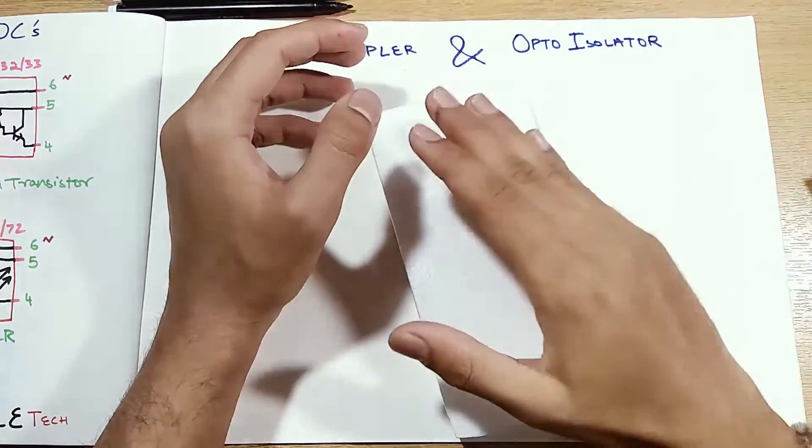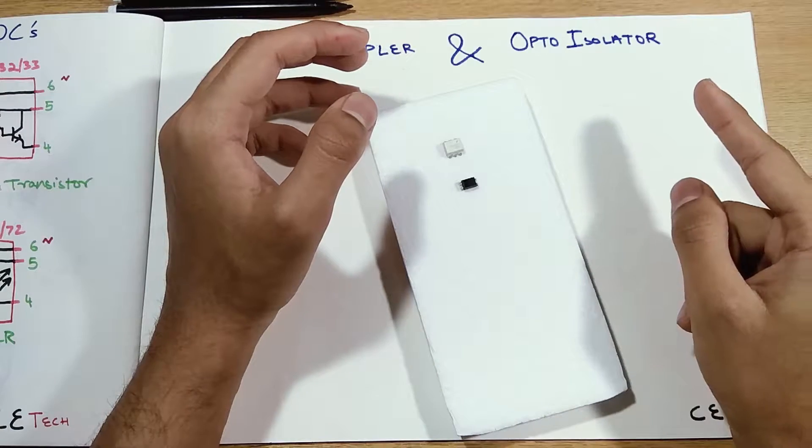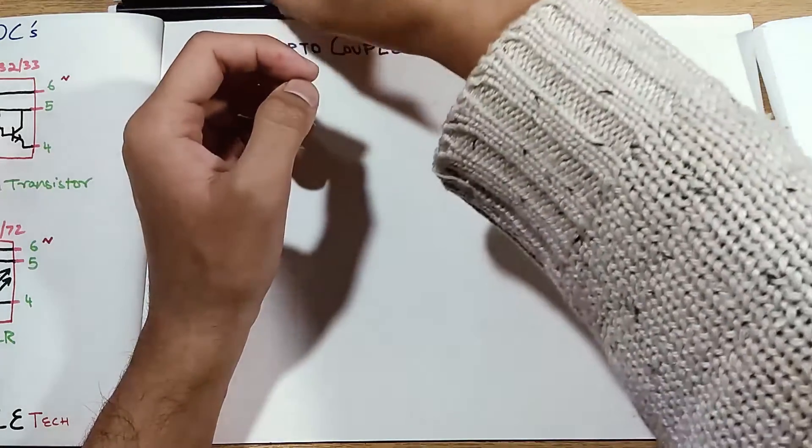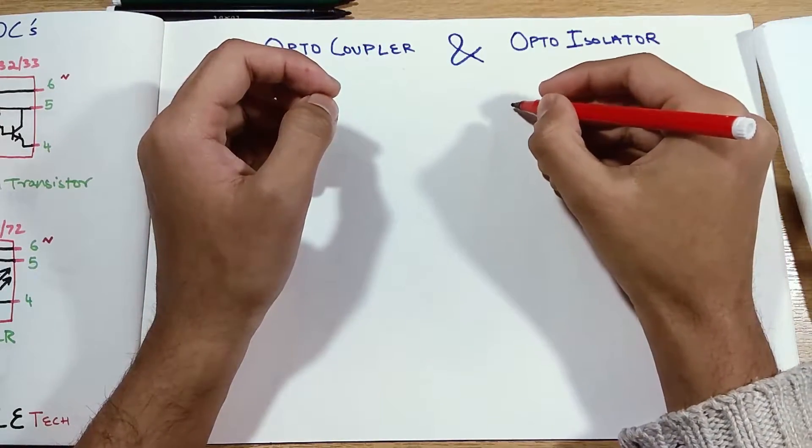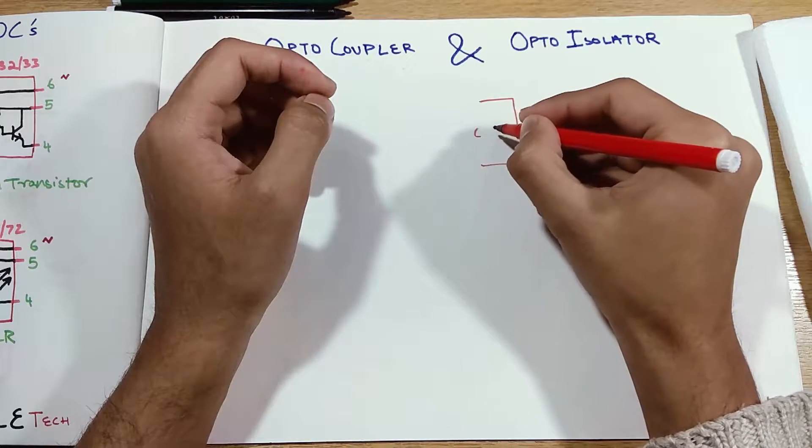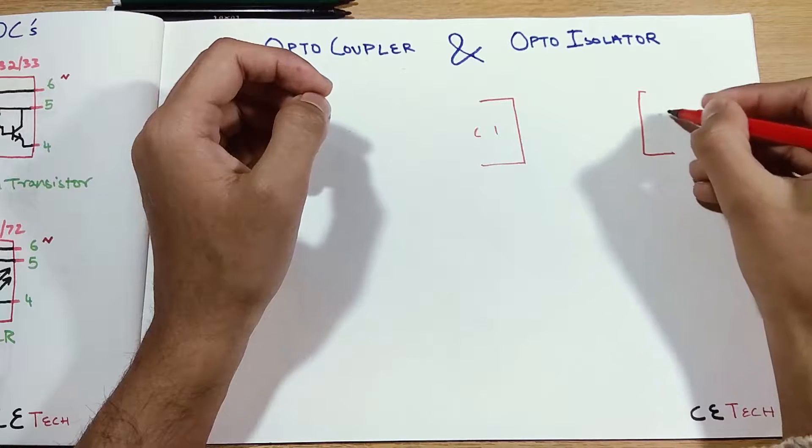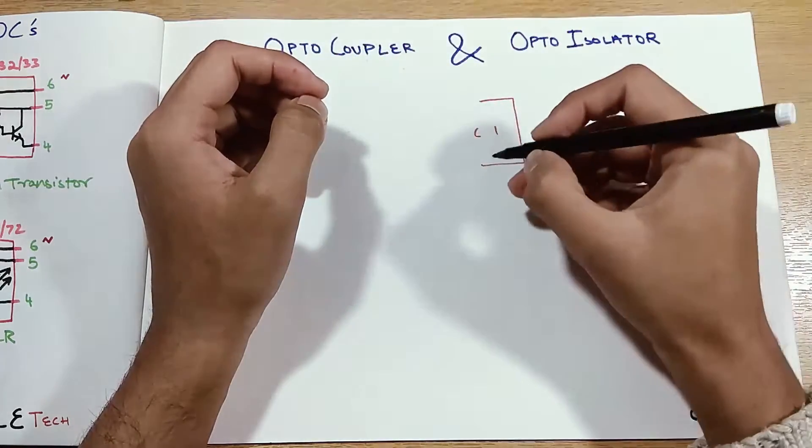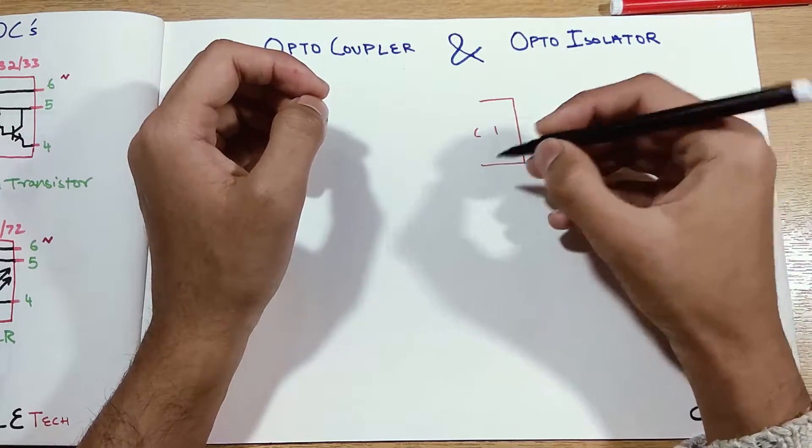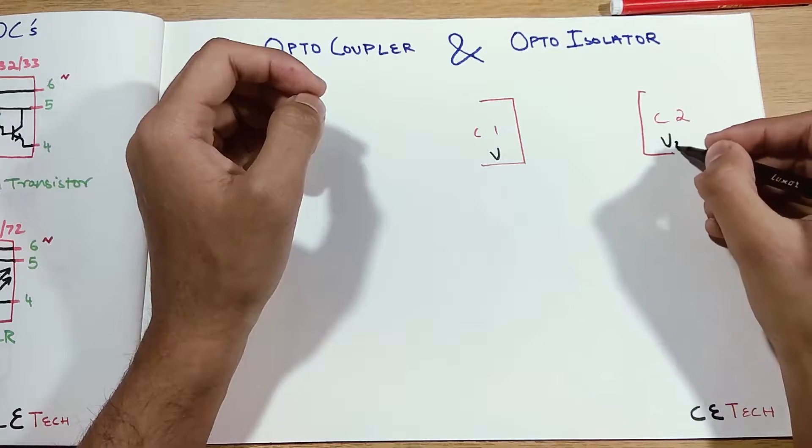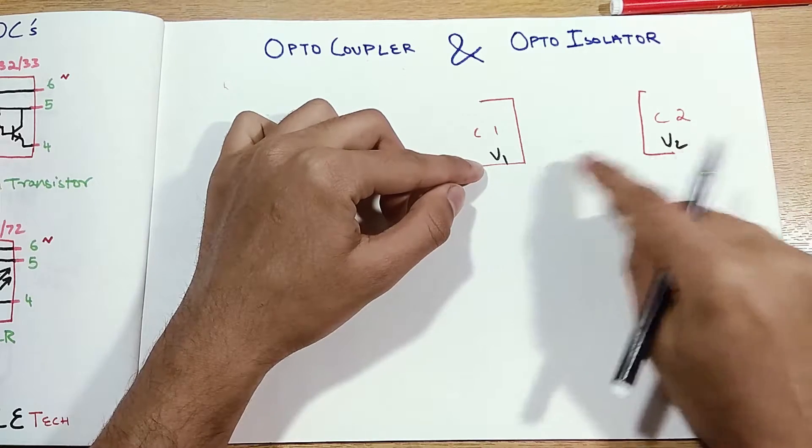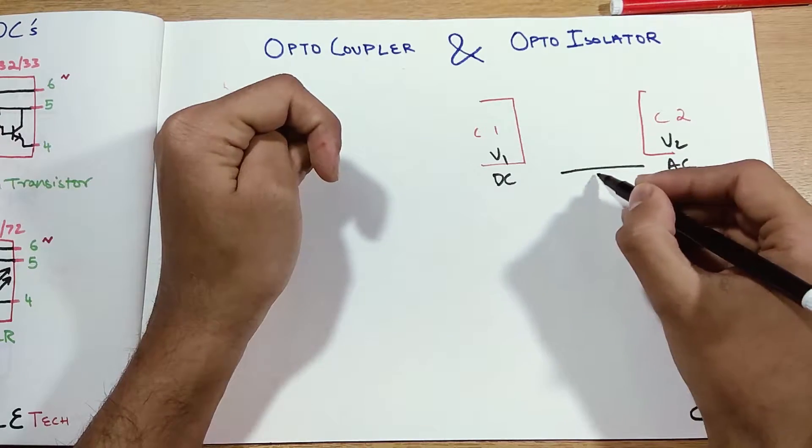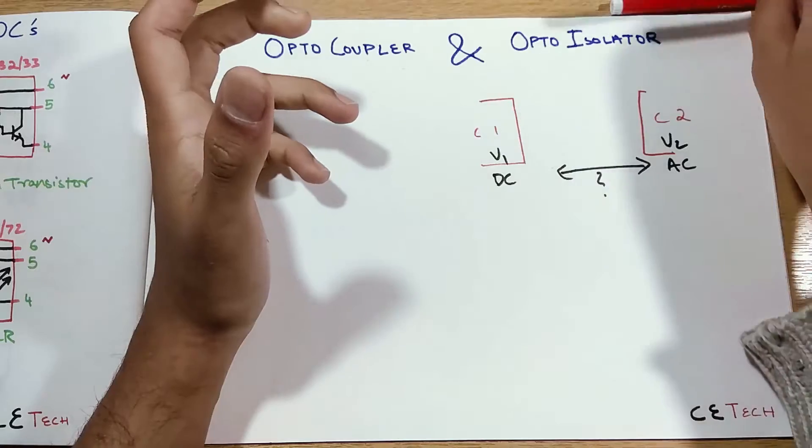Now optoisolator doesn't mean that you're isolating two different optical sources. It is that you are isolating two different parts of the circuits using optoelectronics. So this is circuit part one C1 and this is C2 circuit part two. This part of the circuit may use some voltage V1 and this may use some voltage V2. These voltages may be very different like this would be DC and this would be AC.